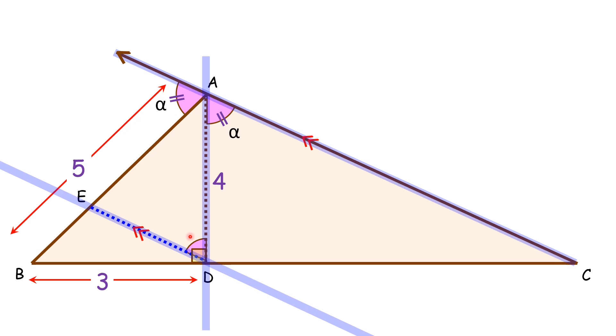Also, AE is acting as a transversal, and thus this angle A and this angle E are alternate interior angles, and thus it will be alpha degrees.